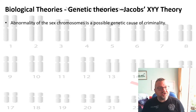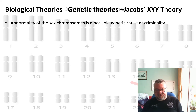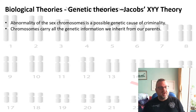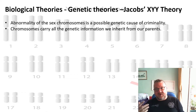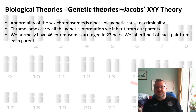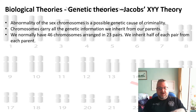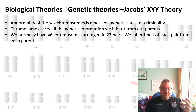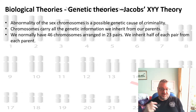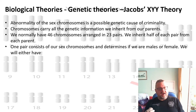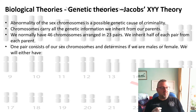Jacobs is saying that an abnormality of the sex chromosomes is a possible genetic cause of criminality. We normally have 46 chromosomes arranged in 23 pairs, inheriting half of each pair from each parent — 23 from the mother and 23 from the father. One pair consists of our sex chromosomes, and they determine whether we're male or female.